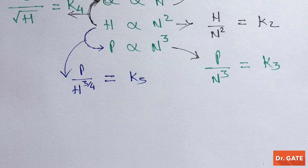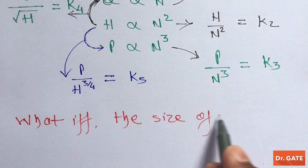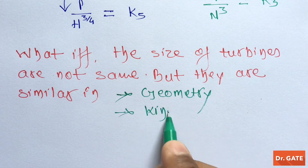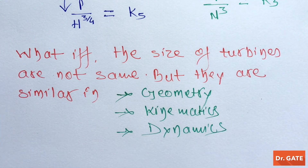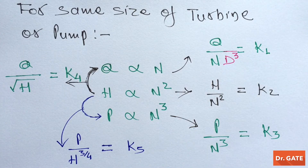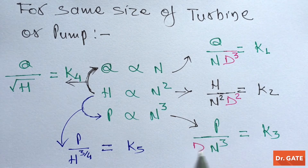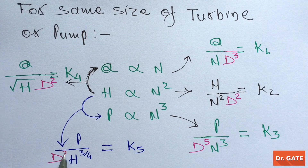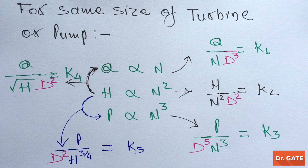So far we were doing analysis for the same size of turbines. What if the sizes are not the same, but they are similar in geometry, kinematics, and dynamics? In that case, we multiply D-cubed to the discharge term, D-squared to the head term, D to the power 5 to the power term, and D-squared to the remaining terms. These expressions then become valid for geometrically, kinematically, and dynamically similar turbines or pumps of different sizes.